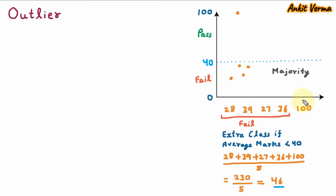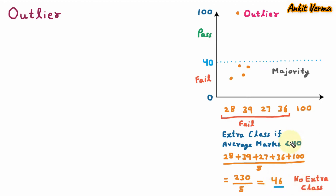This is because we are having one student who is having so high marks, which is 100. This 100 value is very far from the majority, so this is the outlier. The impact of outlier is so high that the complete average is going above. And because of only one student, there will be no extra class, because the average is greater than 40. Only because of one student, the deserving students, which are in majority, are not getting the class. So this is the impact of an outlier.